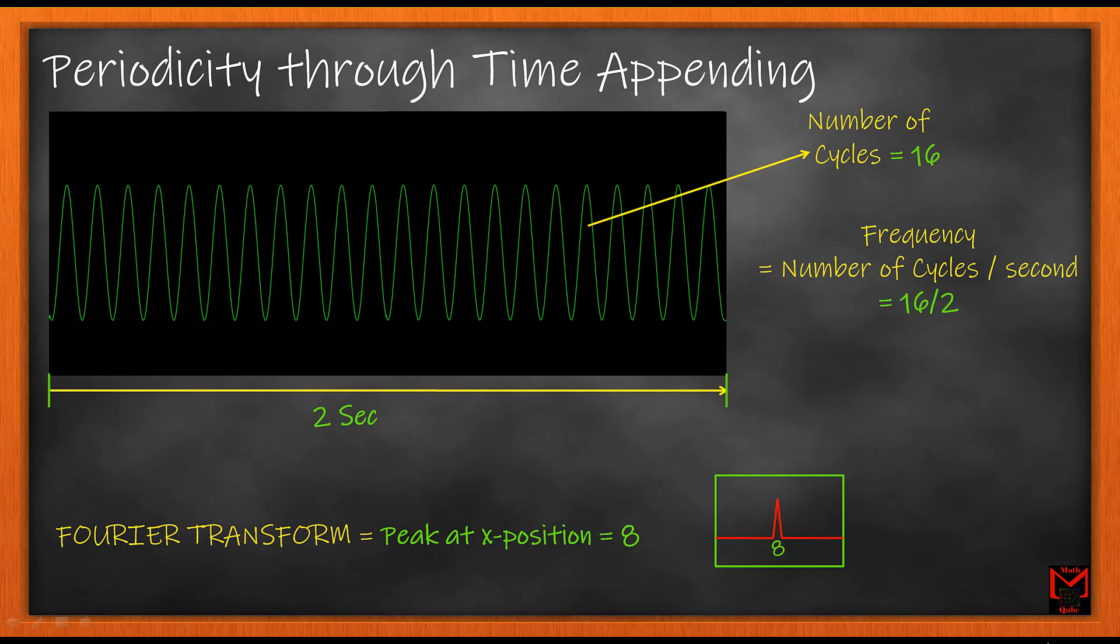So we have two types of cycle change which can be done on a periodic signal. The one is adding extra cycles in the same duration, the equal time duration. The second one is adding extra cycles by increasing the time duration.